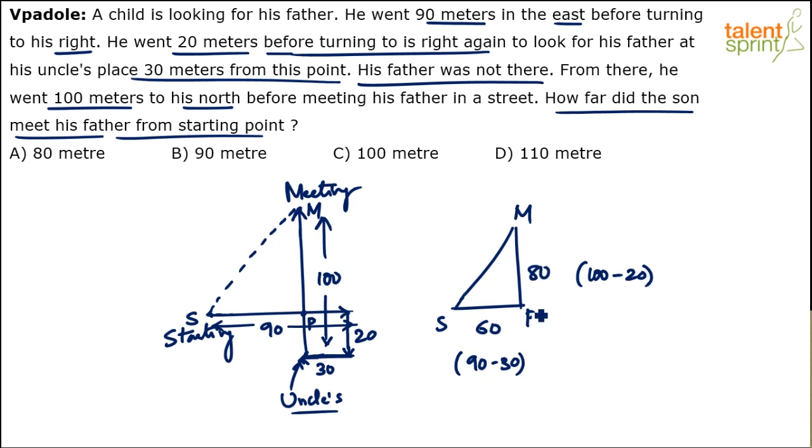So what should be MS? Pythagorean theorem. Root over 80 squared plus 60 squared. So that's like 6400 plus 3600, which is 10,000. And square root of 10,000 is 100. So this comes out to be 100. So his father was found 100 meters from his starting point.